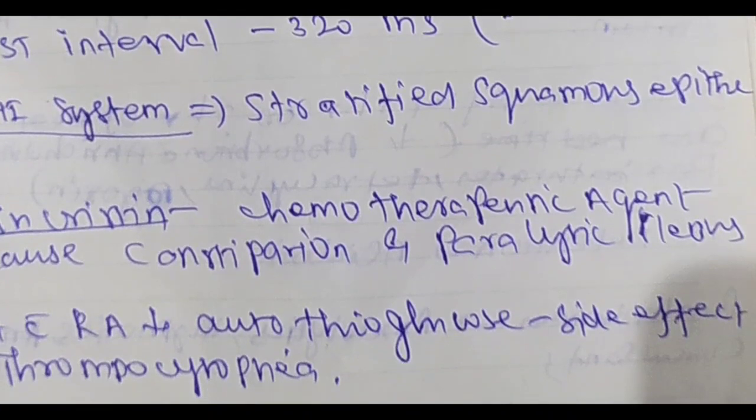Vincristine, a chemotherapy agent, causes constipation and paralytic ileus. So vincristine — the chemotherapy agent — is known for causing constipation and paralytic ileus.